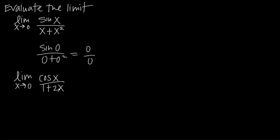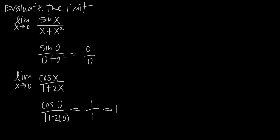Now that we've applied L'Hôpital's rule one time, we plug in x equals 0 to see if we get a real number instead of an indeterminate form. Plugging in at 0, we get cosine of 0 divided by 1 plus 2 times 0. Cosine of 0 is 1, 2 times 0 is 0, so the denominator is 1, giving us 1 over 1, or 1. We now have a real number answer, so the limit of the original function as x approaches 0 is 1.